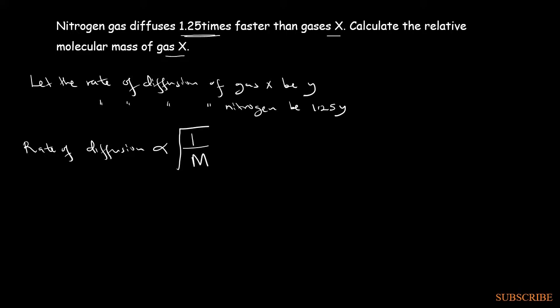Where our capital M is our molecular mass. So that means if we have two gases, we shall find that the rate of diffusion of nitrogen divided by the rate of diffusion of gas X will be equal to the square root of the molecular mass of X divided by the molecular mass of nitrogen.